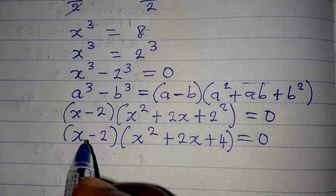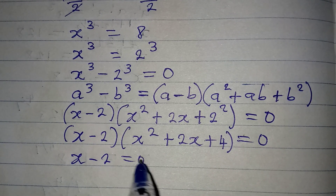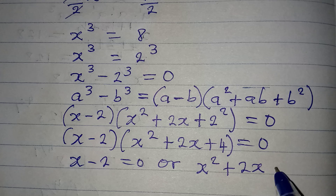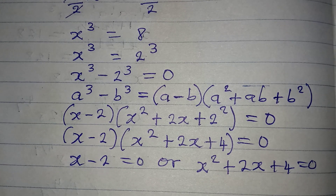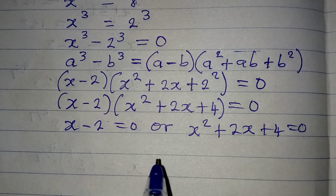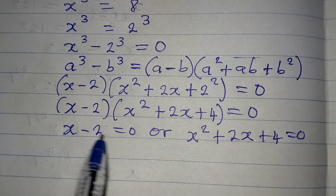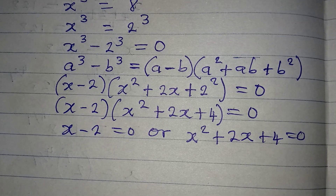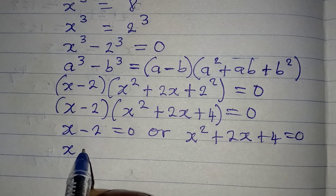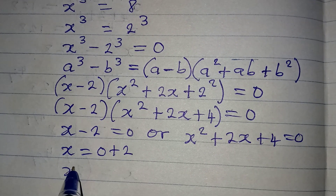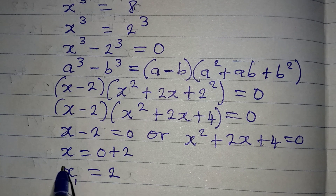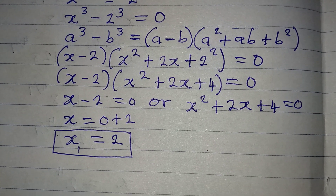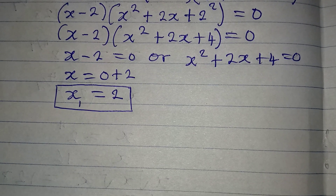This means (x minus 2)(x² + 2x + 4) = 0. From here we have x minus 2 = 0, or x² + 2x + 4 = 0. We get one solution from the linear factor because it's a linear equation, so x = 2. This becomes our x₁.